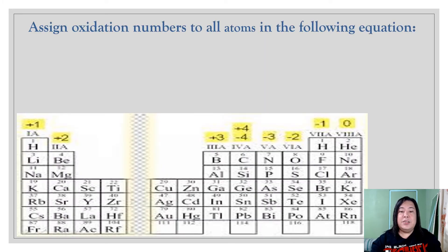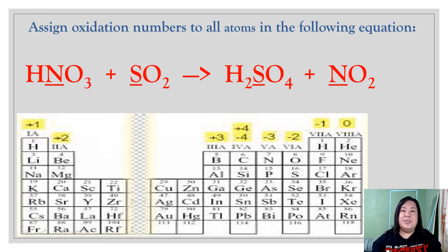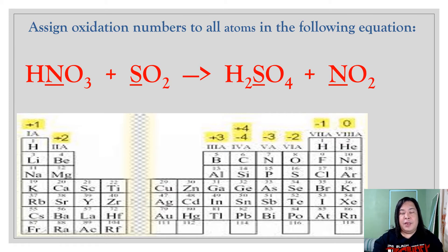For oxidation numbers — assign oxidation numbers to all atoms in the following equation. The first thing to do when given a chemical equation is to assign oxidation numbers to each individual element in order to identify which substance is oxidized, reduced, the reducing agent, or the oxidizing agent. Your periodic table is a helpful tool in assigning oxidation numbers.